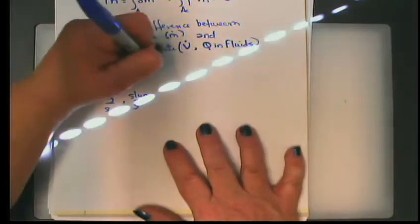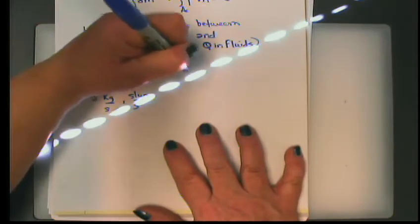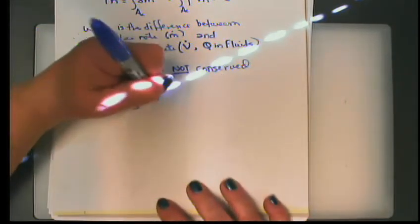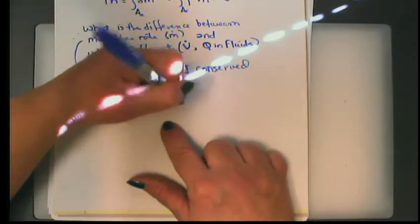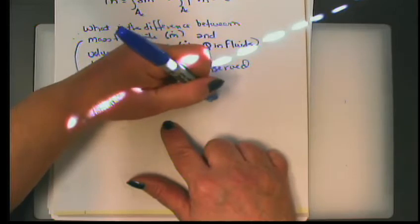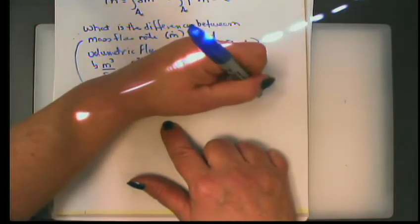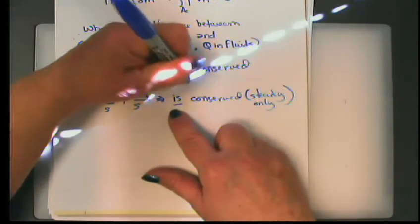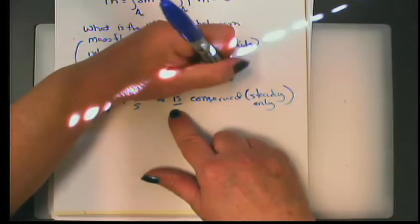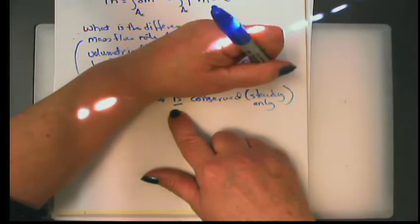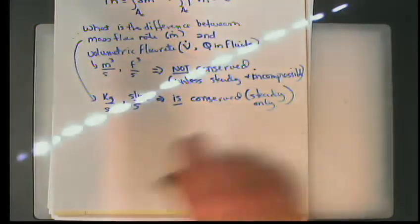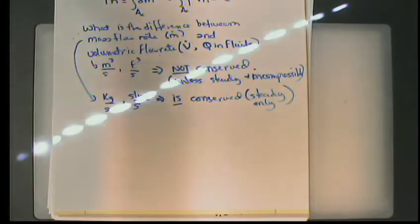More importantly, volumetric flow rate is not conserved — the volumetric flow rate in does not necessarily equal the volumetric flow rate out in a pipe. But mass flow rate is conserved under steady conditions. Volumetric flow rate is only conserved if the flow is steady and incompressible. How far back you have to go to get a general equation just depends on what conditions are met by the particular situation.